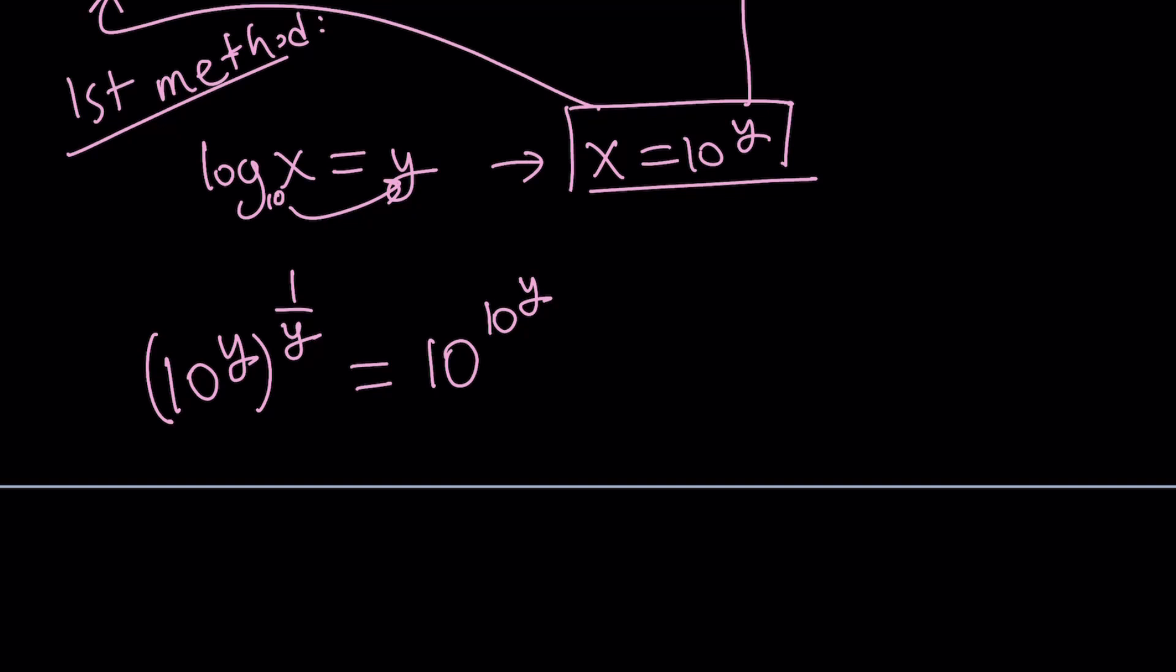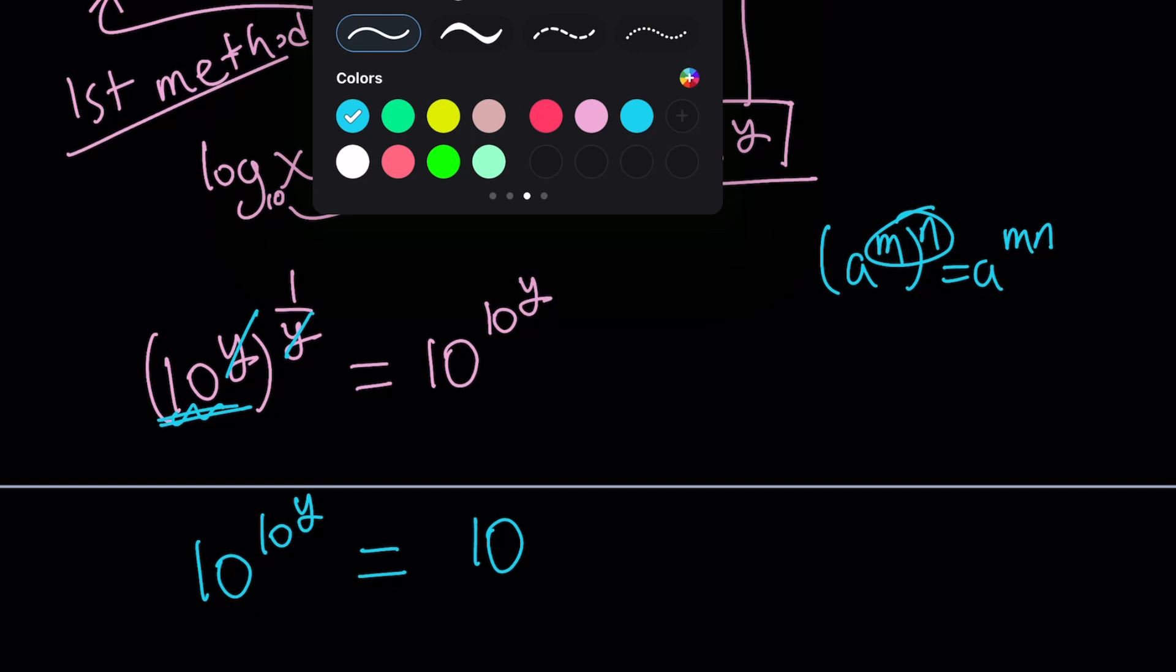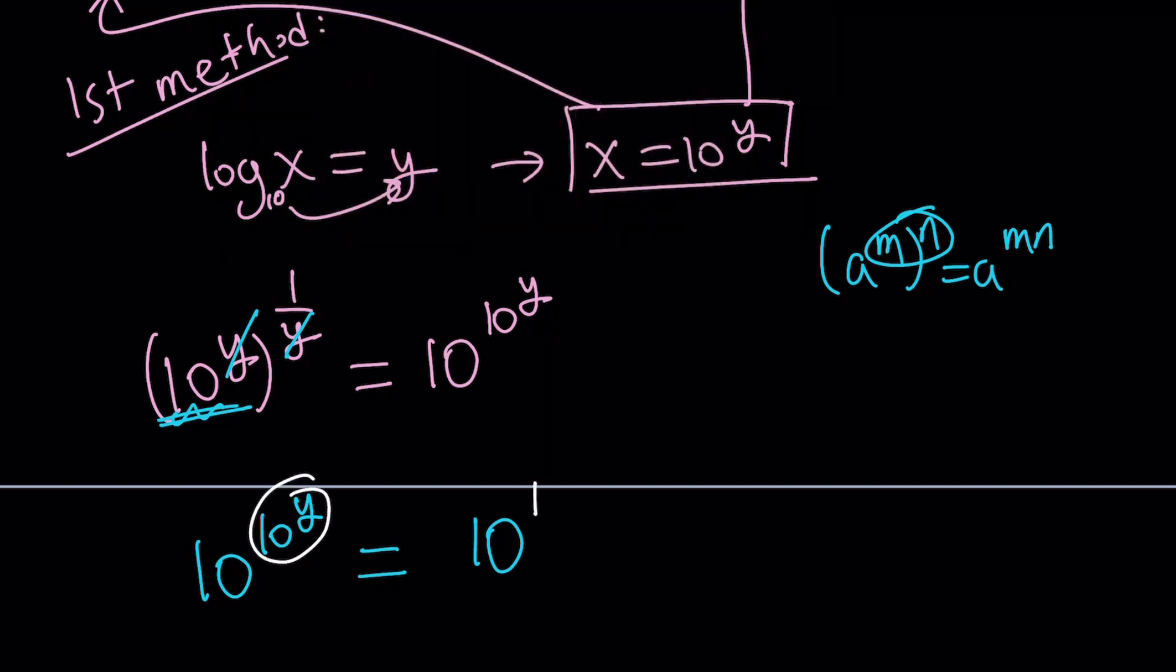What do we know about multiplication of exponents? So if you have a to the power m to the power n, this is a to the power mn. So we multiply these exponents and that's what we're going to do here. But y times 1 over y is equal to 1. They are reciprocals, they just cancel out. So we end up with a 10 here and on the right hand side we have 10 to the power 10 to the power y. Let's write what's on the right hand side on the left hand side. So 10 to the power 10 to the power y equals 10. And this means that if the bases are equal, the exponents are also equal. So 10 to the power y must equal 1.